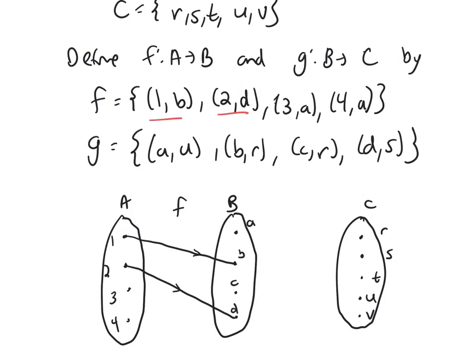And then 3 goes to A. So draw an arrow from 3 to A. And then 4 goes to A as well. So this function is not one to one. That's okay. So there's F.